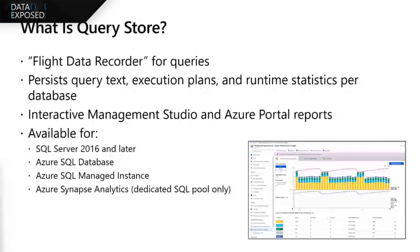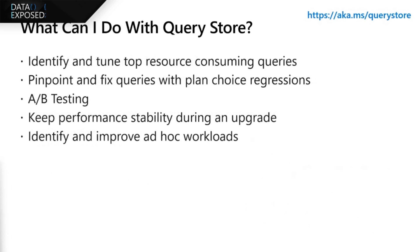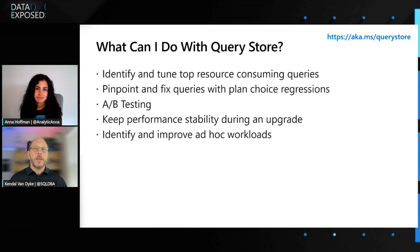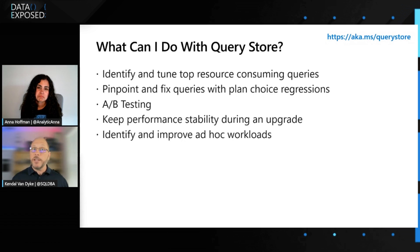Most people think of Query Store as a way just to tune performance, but it actually helps you do a lot more than that. Most people use it for looking at things like top resource consuming queries — the things that are causing you pain or running long. You can also use it to figure out queries that have plan choice regressions. Oftentimes something changes in the middle of the night — stats get updated or indexes get rebuilt — and query performance goes south. With Query Store, you can find those queries pretty easily. You can also leverage it for A/B testing, like applying an index — did the index help? You can look at your Query Store reports and decide the before and the after.